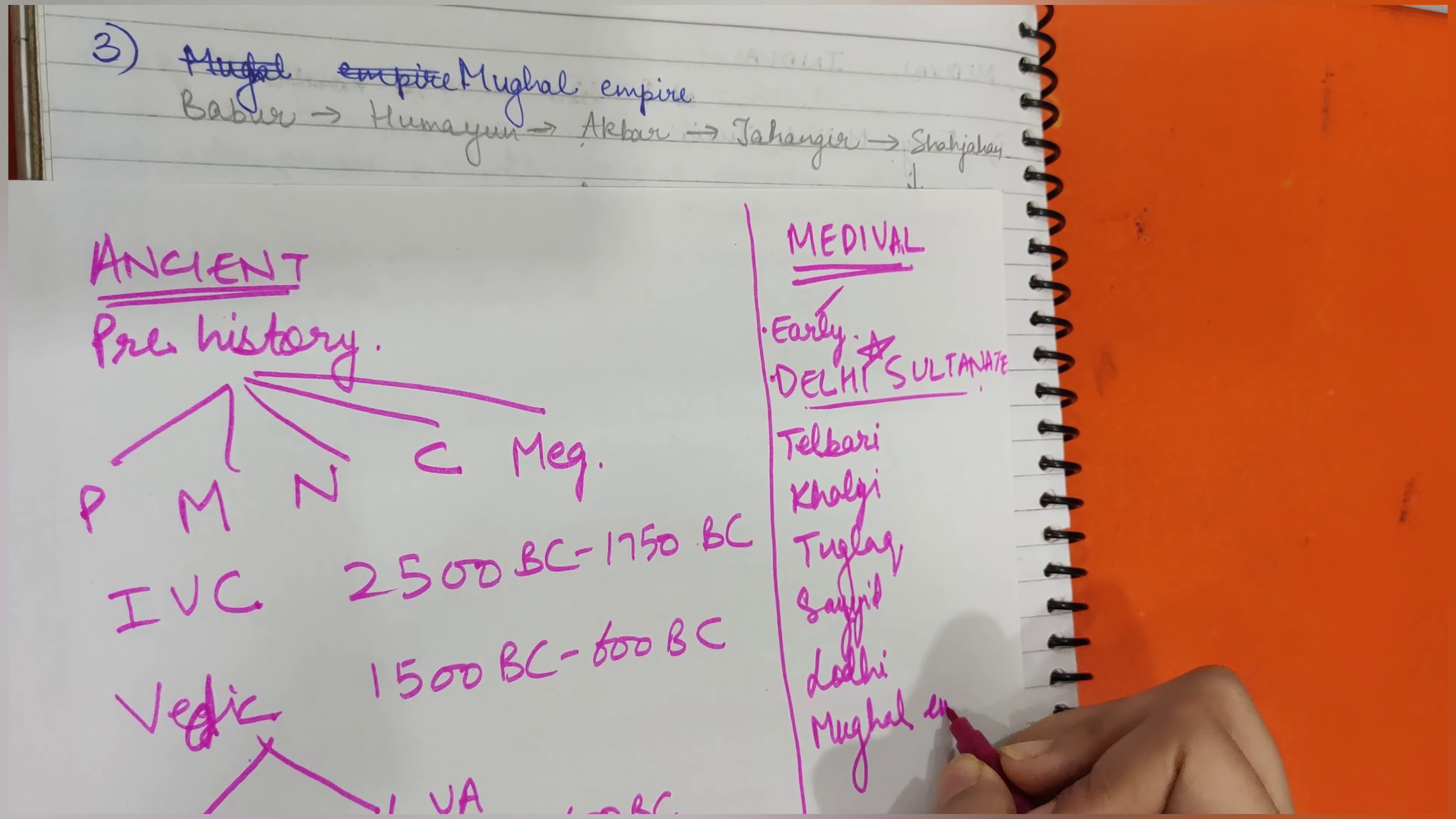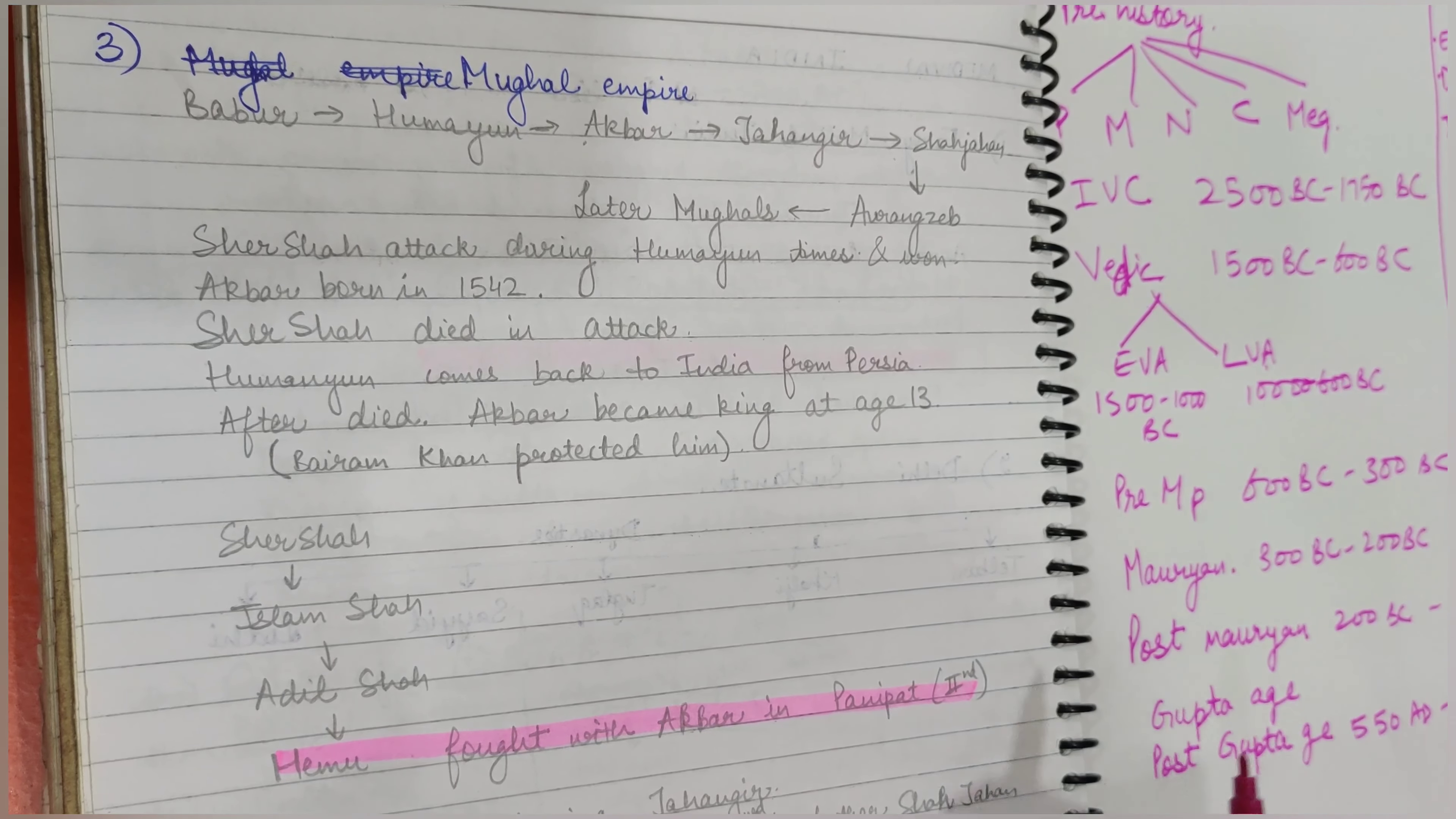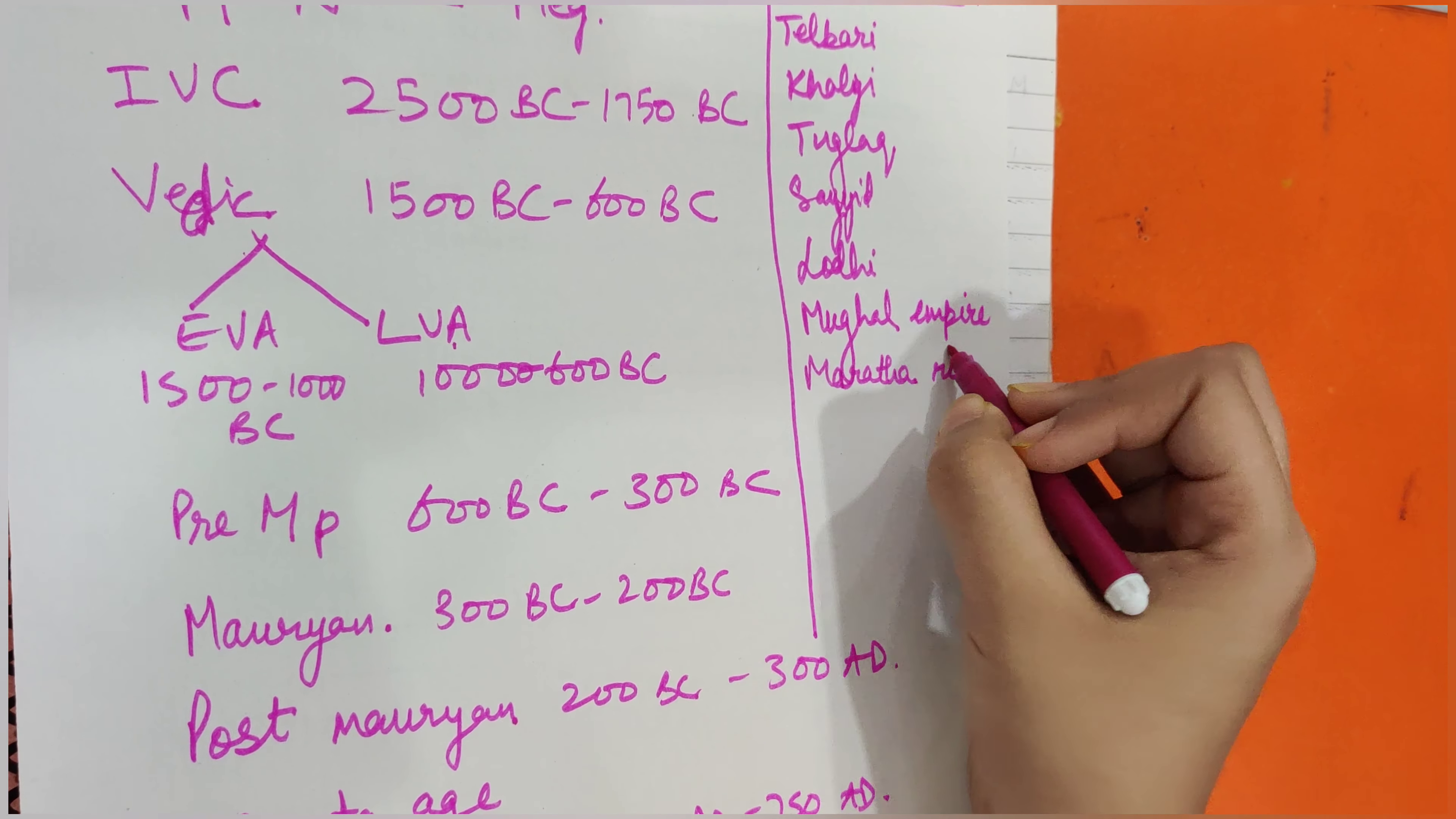You know the chronology: first Babur came, then Humayun, then Akbar, Jahangir, Shah Jahan, Aurangzeb, and then the later Mughal Empire. We'll study all of these kings in detail, what was the architecture during their time, what were all the wars that were conducted. The last topic would be Maratha rise within Medieval India.